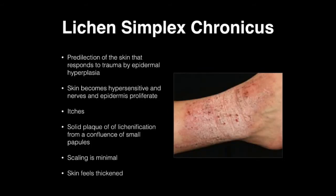The next thing we want to talk about is something called lichen simplex chronicus — another type of eczema skin disorder. This is caused by proliferation of the skin in response to trauma, epidermal hyperplasia. The skin becomes more hypersensitive as nerves of the epidermis proliferate, and it itches really, really bad. You'll see a solid plaque of lichenification from confluence of small papules. Skin leaning is minimal, and skin feels thickened in that area, especially chronically.